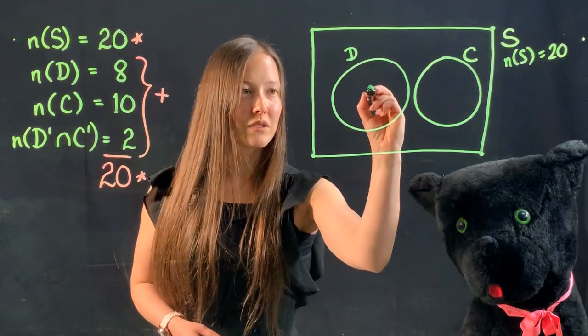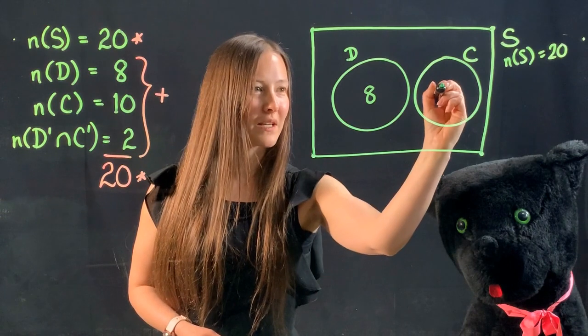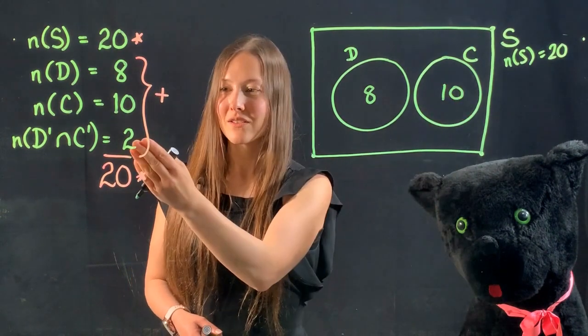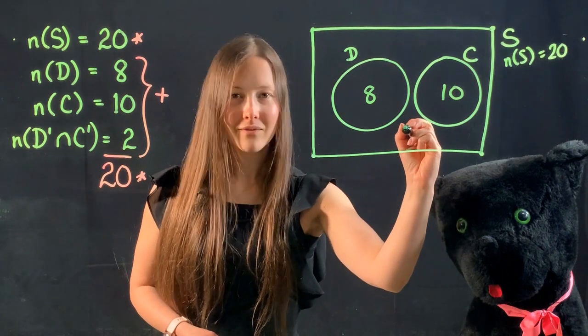Eight own dogs. So that will go in the dog circle. Ten own cats. So that will go in the cat circle. And two own neither dogs nor cats. That will go in the outer region.